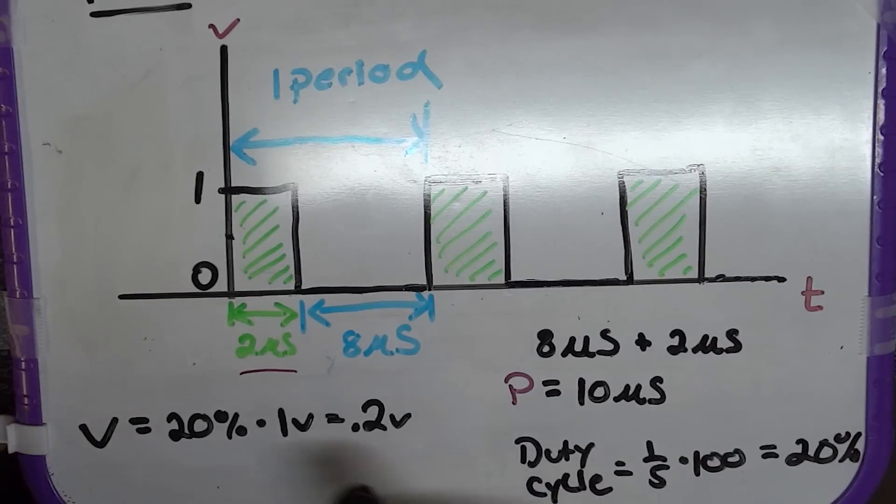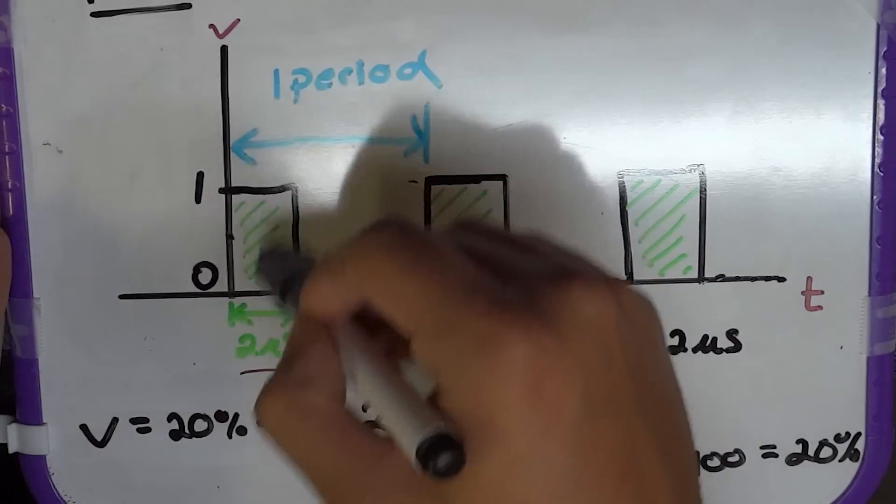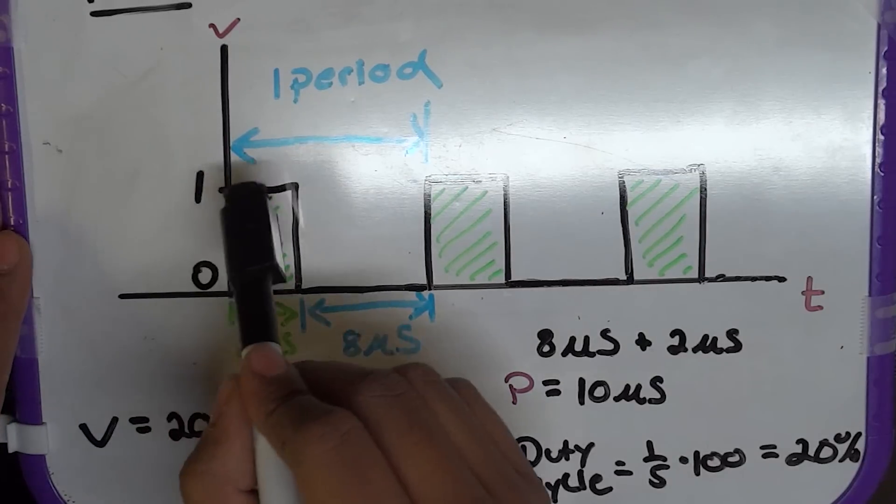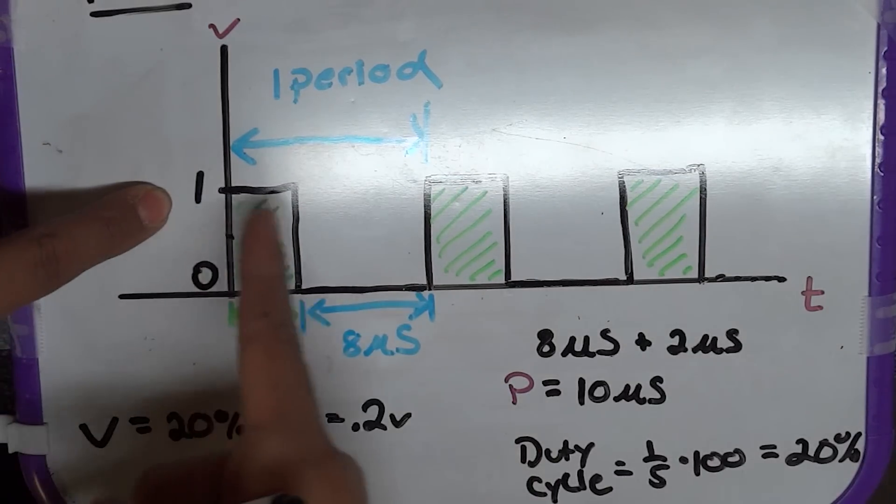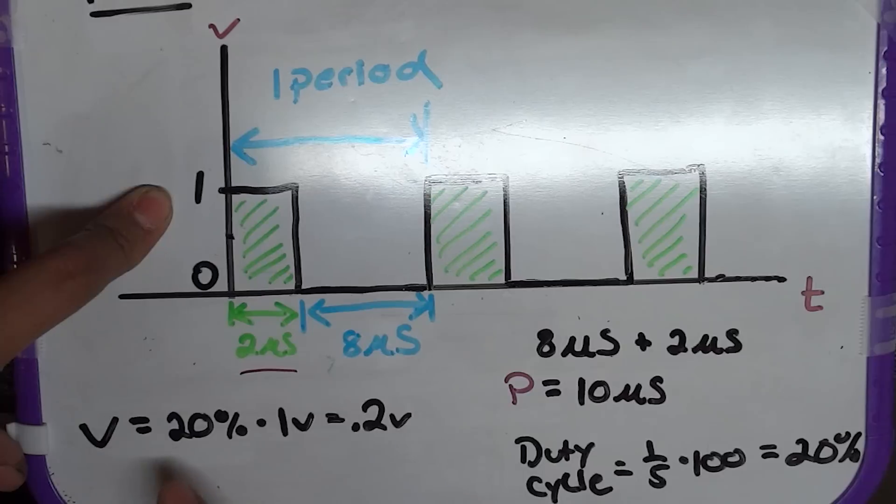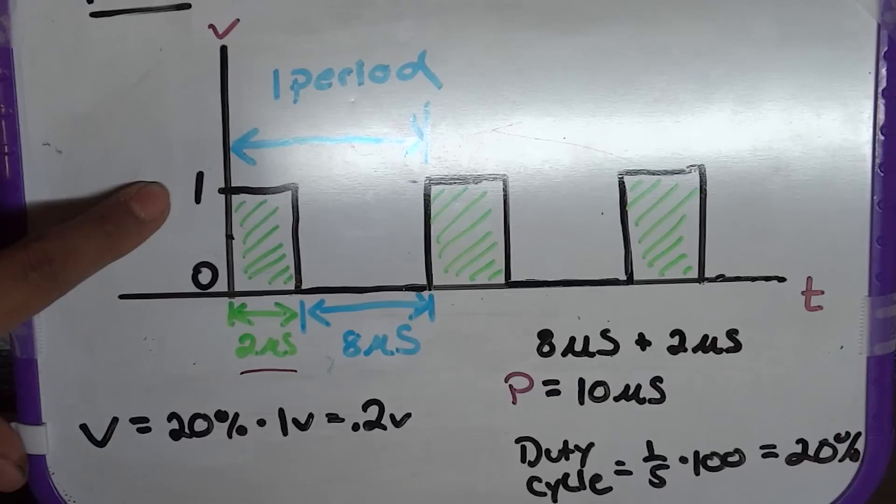Now, if we want to find the voltage, you find the voltage that your peak is going to be at. In this case, our peak was at 1 volt of the PWM signal. And we multiply that by 20%. So, 20% of 1 volt is 0.2 volts. And that's our voltage.